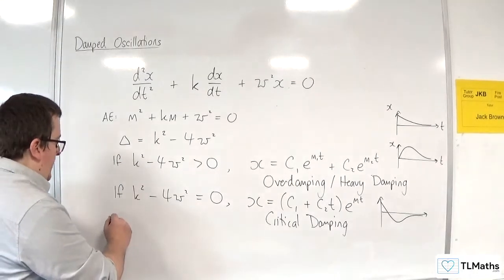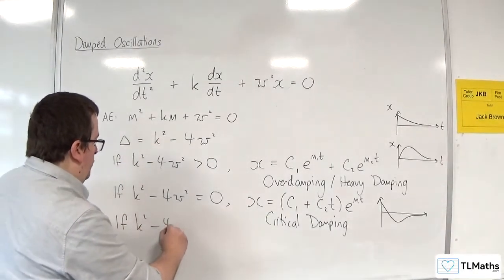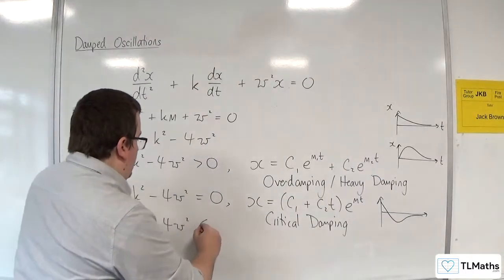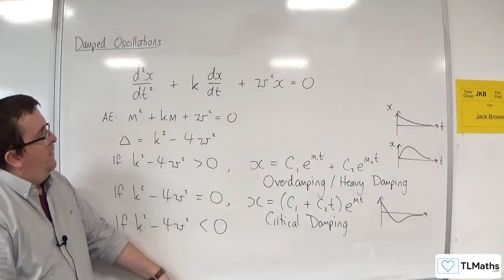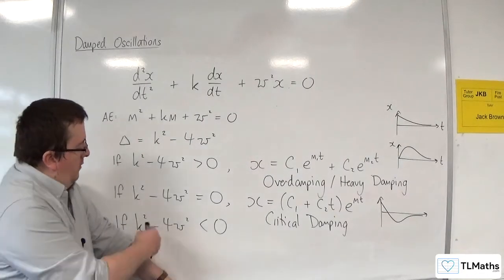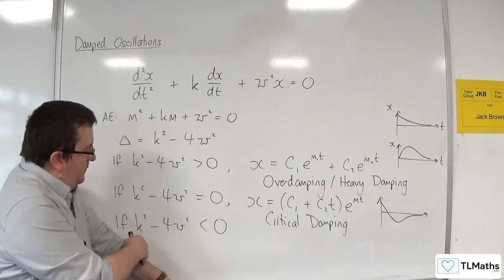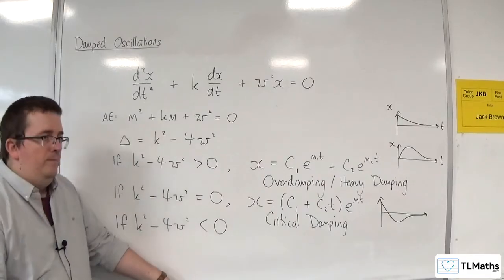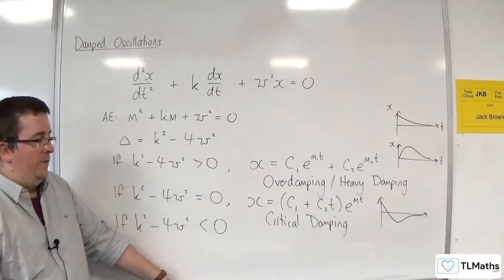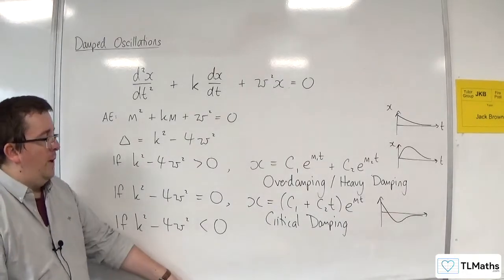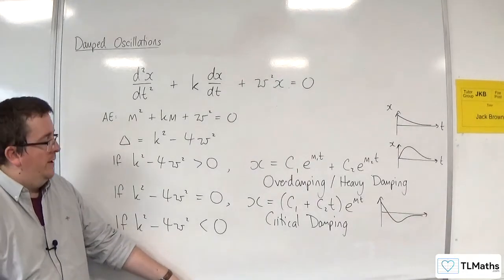If, on the other hand, you have k² take away 4ω² is negative, this situation finds it, well, where k in this case might be quite small. It doesn't have to be, of course, but the 4ω² just needs to be larger than k² in order for this to occur.